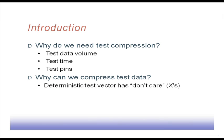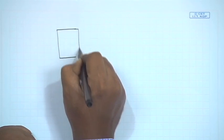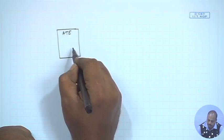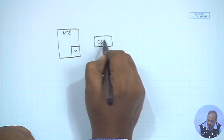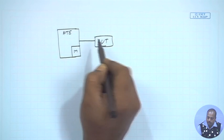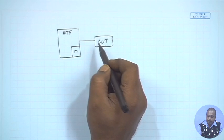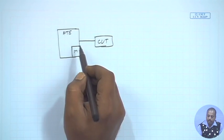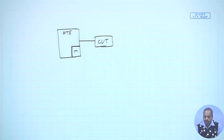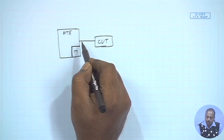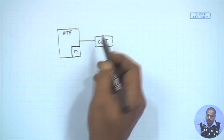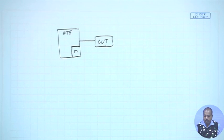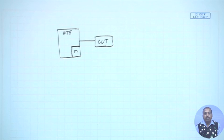For a typical test pattern application environment for external testing, we have an automated test equipment with a memory, and the circuit under test. These test patterns are transported from this memory to the circuit, applied to the circuit, and then the response is collected. If the memory requirement is large, that will increase the cost of the ATE. Similarly, if we want to transfer a large number of patterns, serial communication is not effective, so we need parallel communication — but the number of parallel channels or pins is another issue. The cost of the ATE depends on the number of pins, which is the ATE channel width, and the memory required to store the patterns.